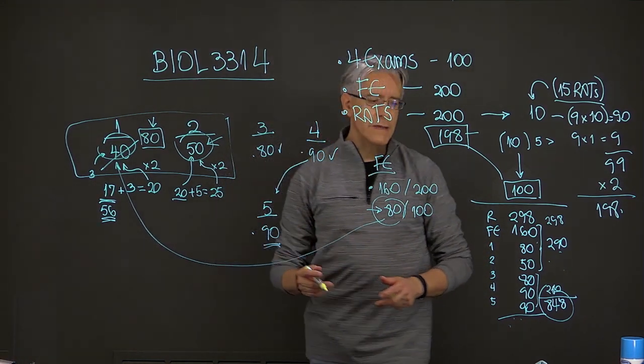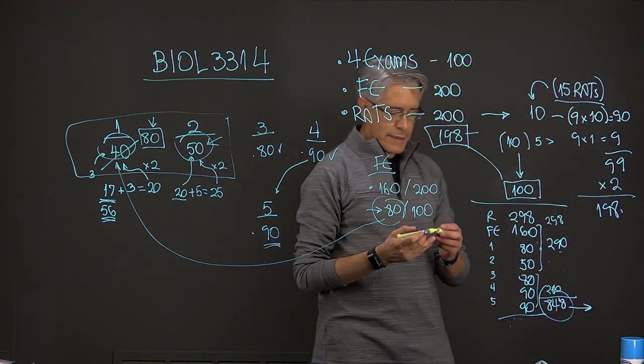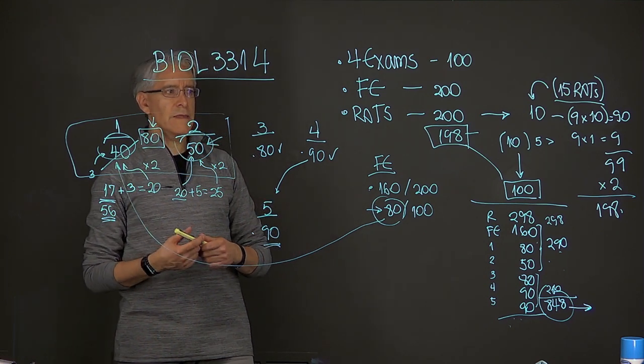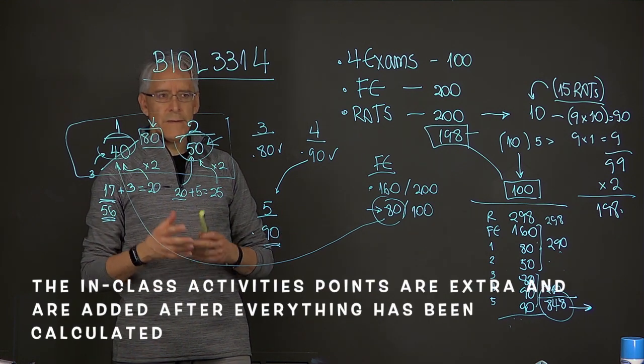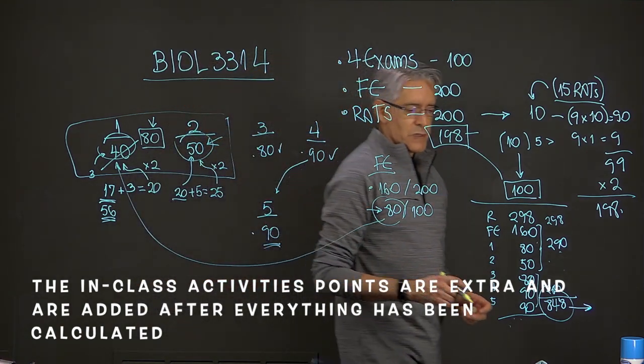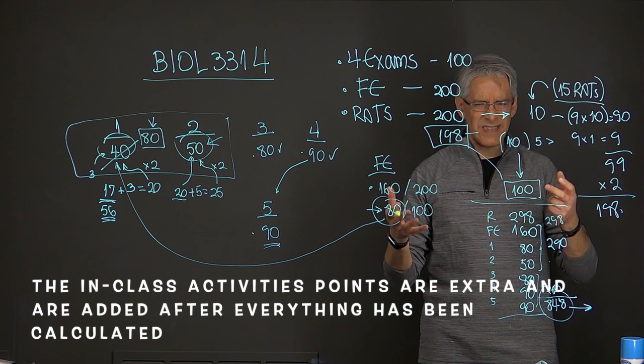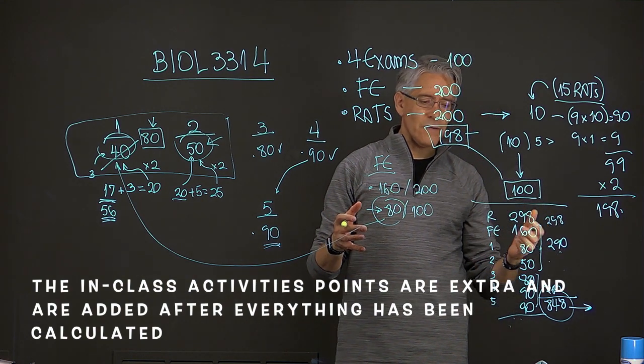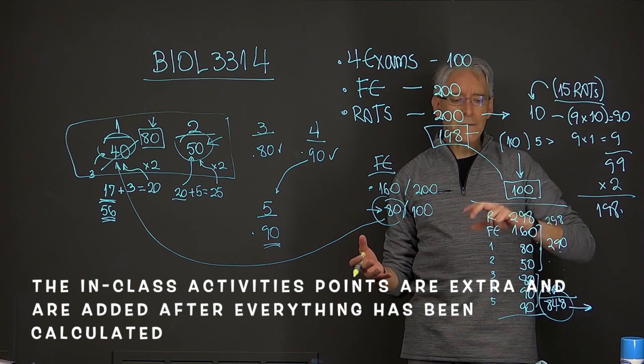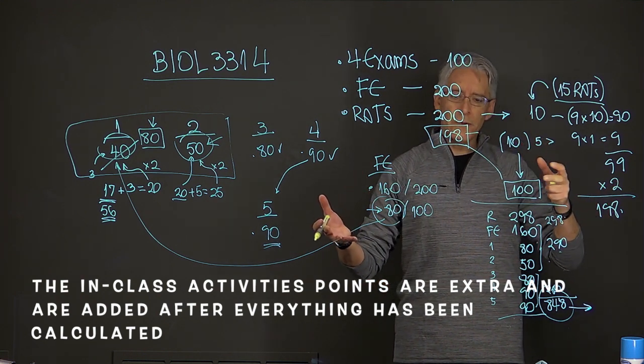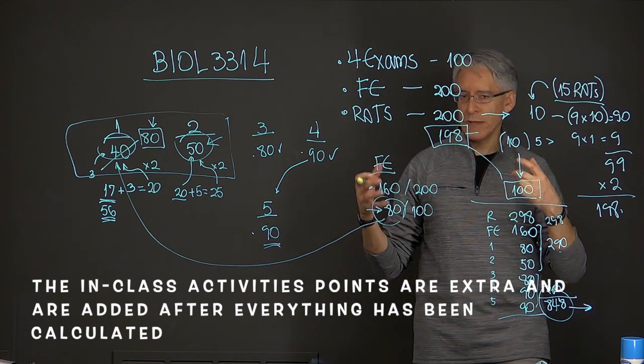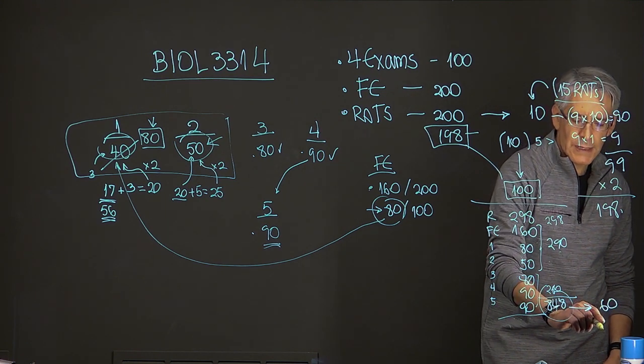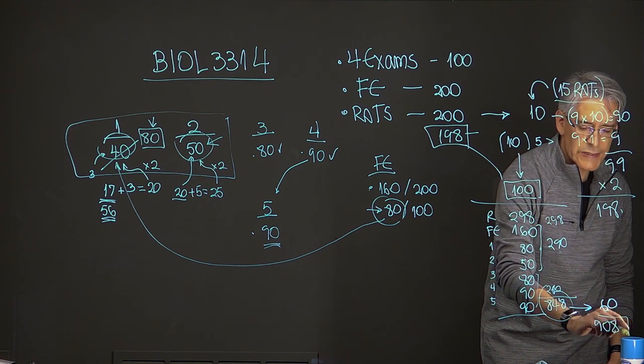But remember, there are additional points that can be added here. And that is the in-class activities. So if this person was somebody who came to class consistently and did all the in-class activities, that person is very likely to have at least 50 points for in-class participation, just for attendance. That is like just for participating in the in-class activities, not necessarily being present in the class, but participating in the in-class activities. And then if the person did fairly okay in those questions, there might be a few extra points. So let's assume that that adds up to 60 points. This now totals 908 points, which is an A in the class.